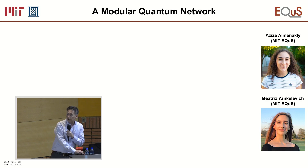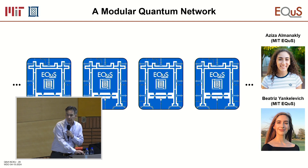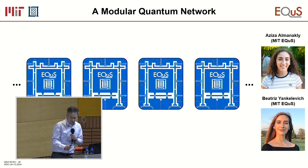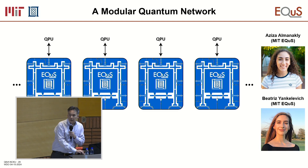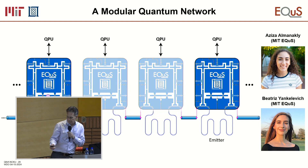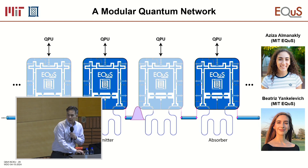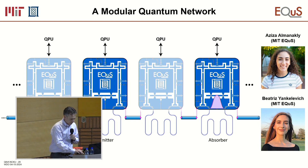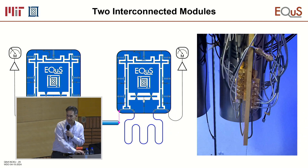We're now working on a modular network — this is work by Aziza and Beatrice. The idea is to have many modules, each connected to its own quantum processing unit, with a waveguide running through them all. We would send a photon from an emitter to an absorber, send it back, and by tuning the frequencies decide who absorbs and who ignores that photon.